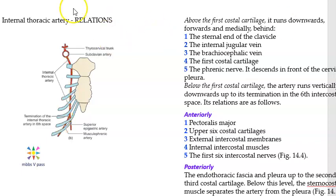Above the first costal cartilage, it runs downwards, forwards, and medially, and is medial and behind the internal jugular vein, the brachiocephalic vein, and the phrenic nerve.